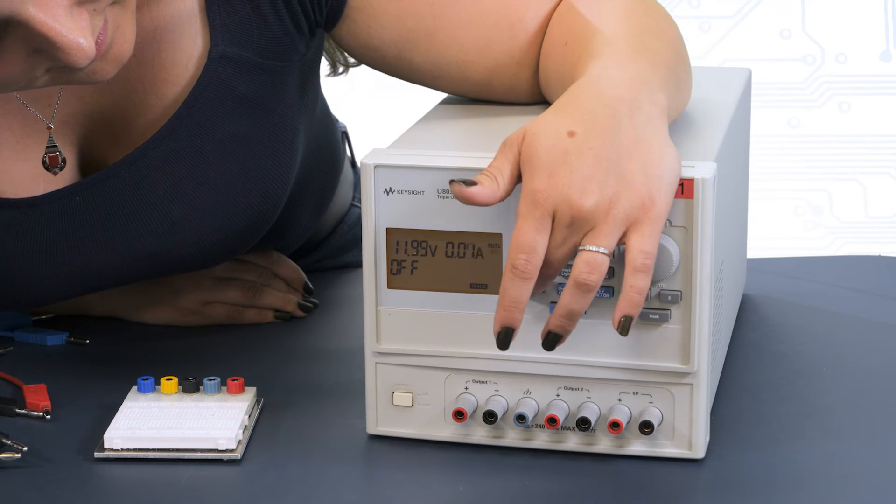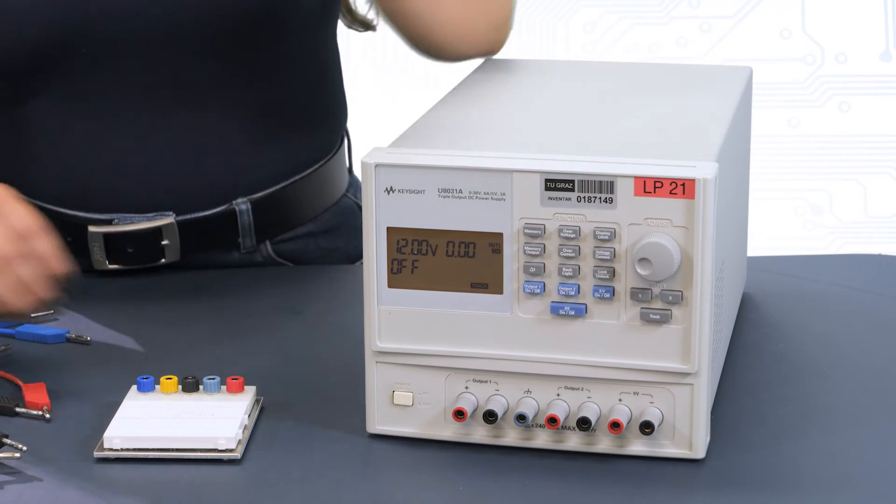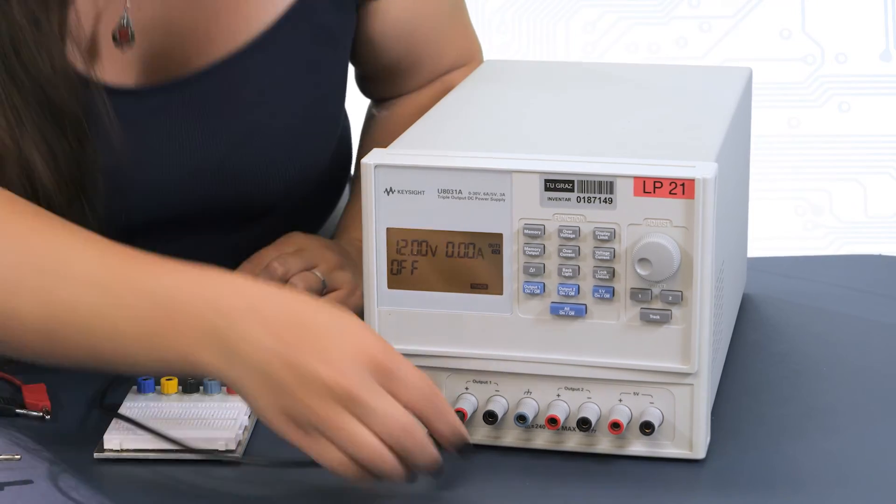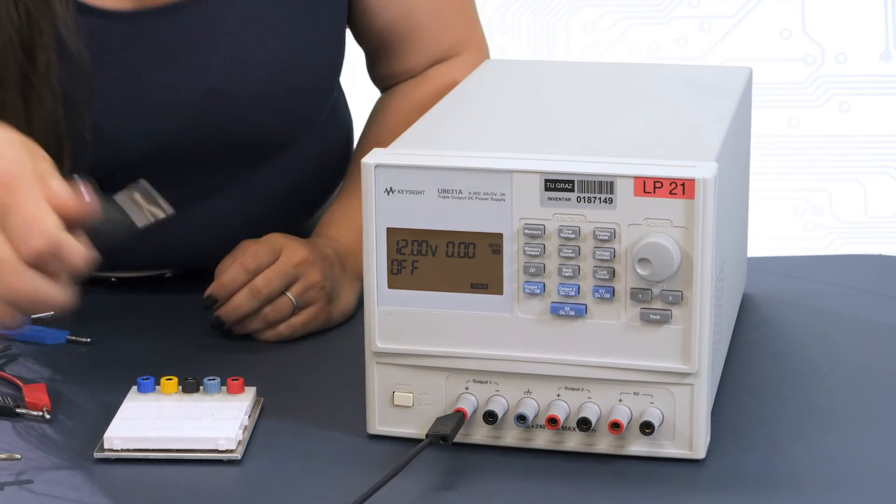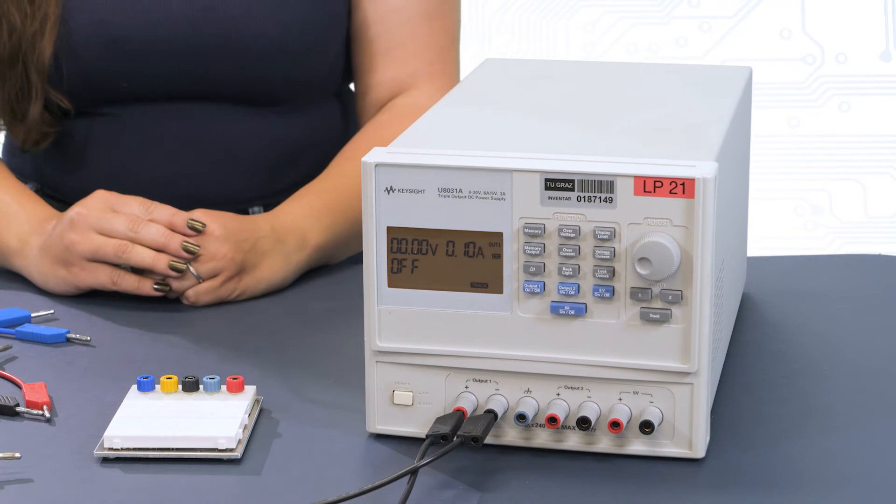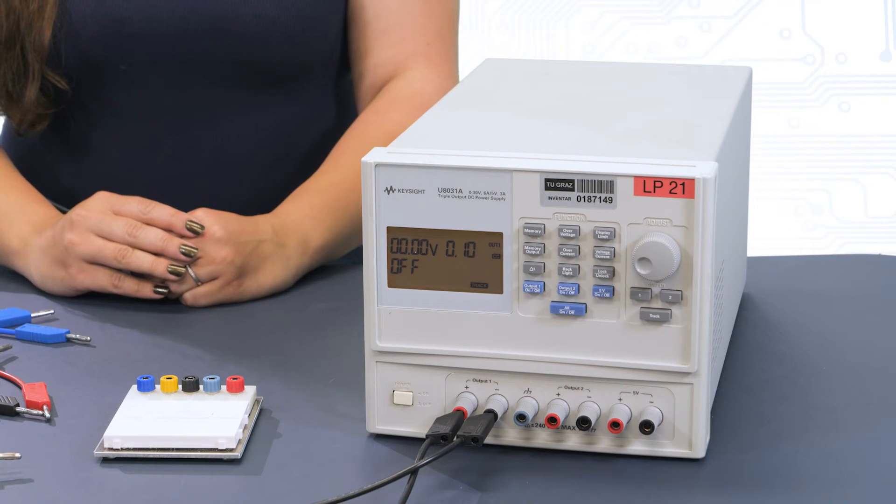Pressing the display limit button again activates the limitation. If the set current limit is reached, the voltage of the affected output is adjusted so that the current remains under the set limit in any case. The same holds true for the set voltage limit, but in this case the current is adjusted to stay below the set limit.